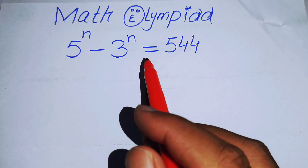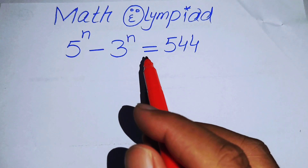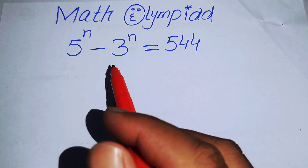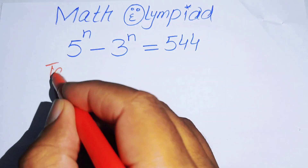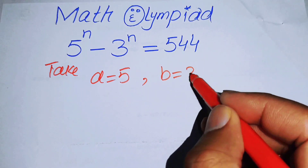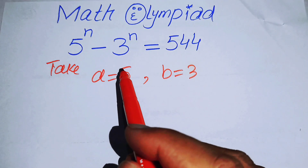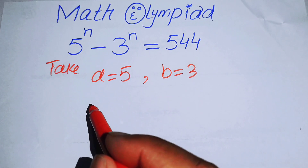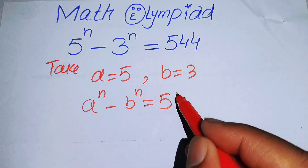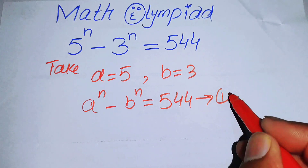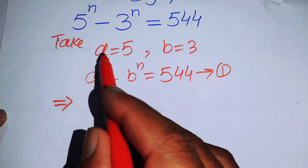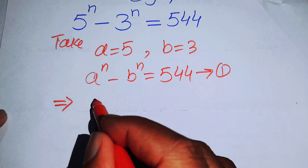We will use the method of reverse engineering, which is a unique method. The first thing we do is let a equals 5 and b equals 3. When we substitute these, the equation becomes a to the power of n minus b to the power of n equals 544 — let's call this equation number 1.